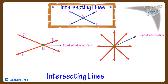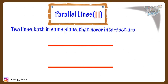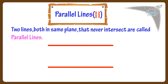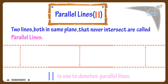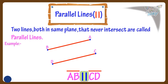Now let's see what are parallel lines. Two lines, both in the same plane, that never intersect are called parallel lines. Parallel lines remain the same distance apart at all times. No matter how far you extend them, they can never meet. This symbol is used to denote parallel lines. Here, lines AB and CD are parallel to each other, and this symbol denotes that.